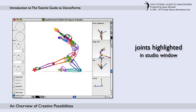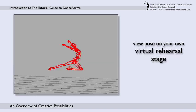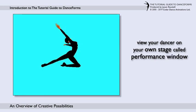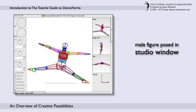Here is the same working pose in the studio window with all the joints highlighted. You can then view this pose as a working figure on your own virtual rehearsal stage, and you can view the same pose as a realistic looking dancer in the performance window.